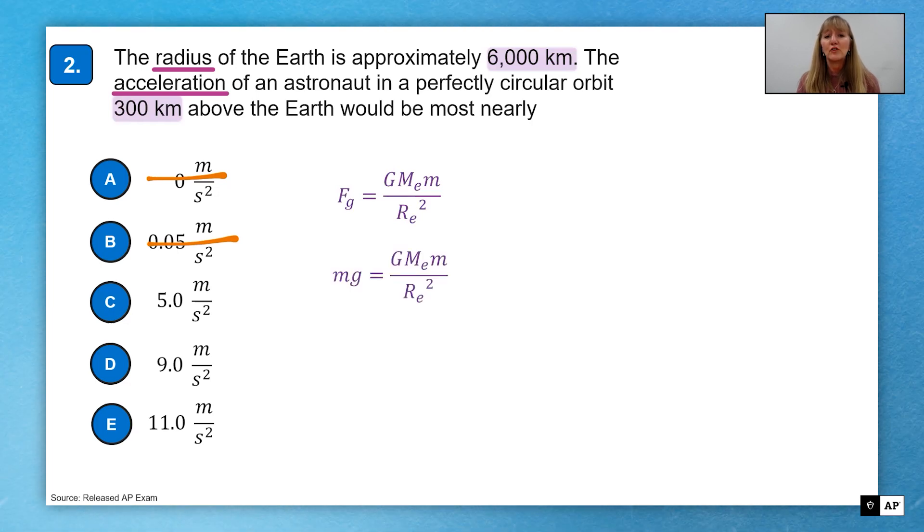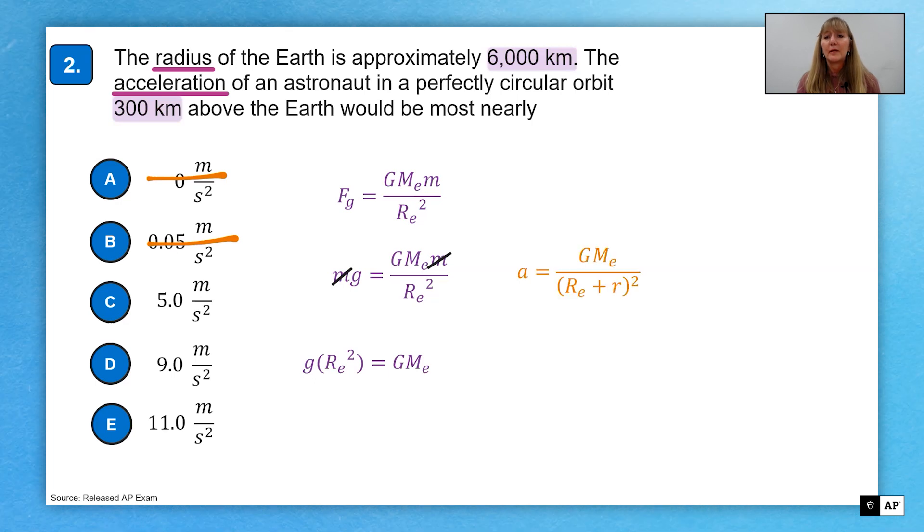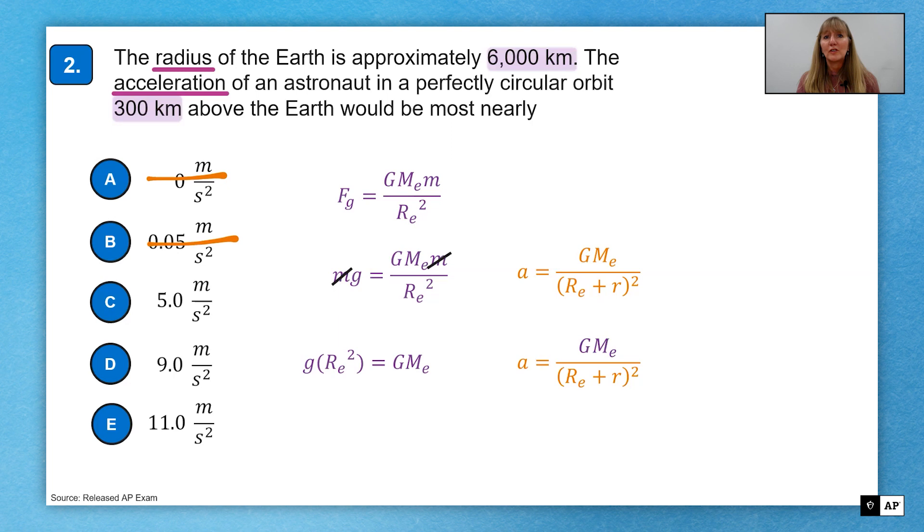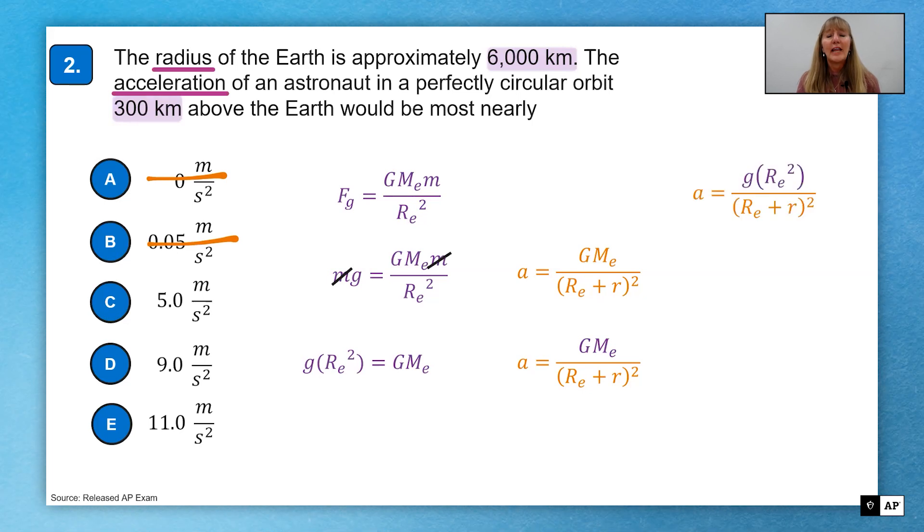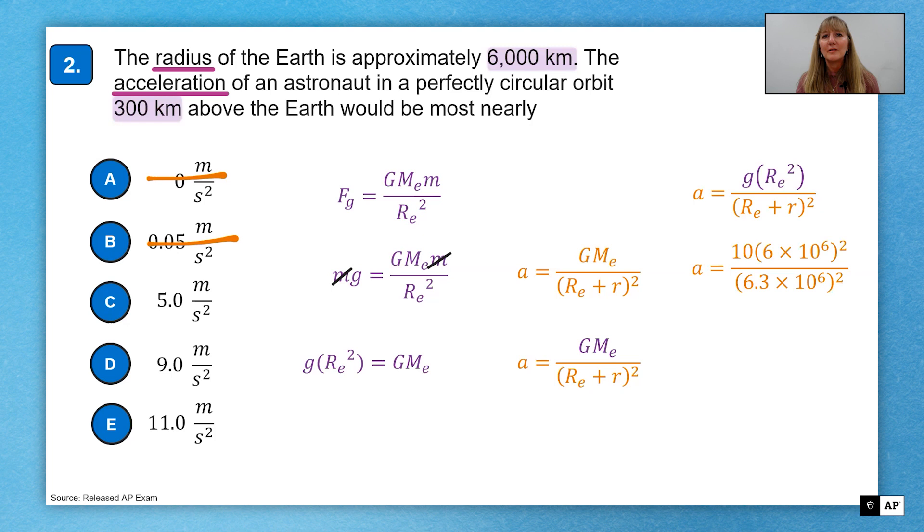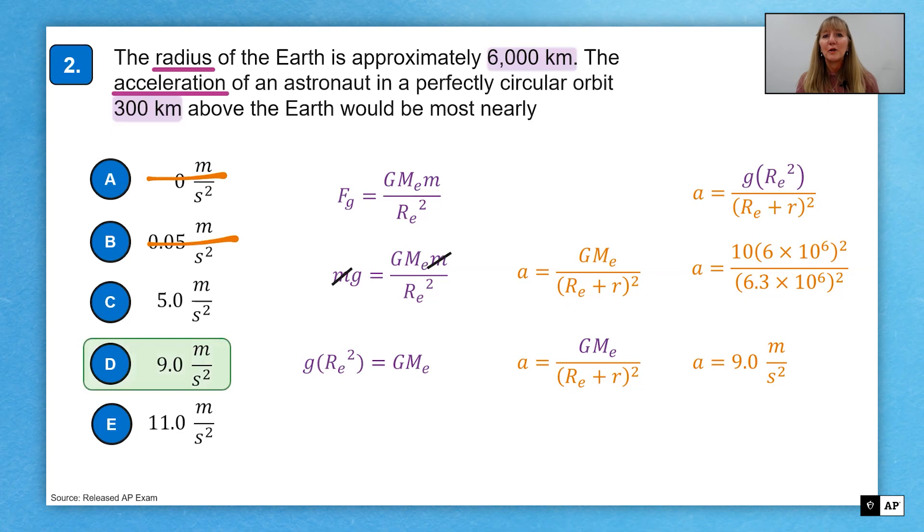Starting with that gravitational force equation, making the substitution for the surface of the Earth equation, I get g equals big G, big M over R squared. This time, however, the radius of the Earth is changing, so I'm going to move that over to the other side and I'm going to leave my constants big G and big M. Starting with the equation now for the radius that's 300 kilometers above the surface of the Earth, then I get this equation, and I can see that again big G, big M in the equation, make that substitution for little g R squared. Now I have all of my variables where I know their numerical values, make those substitutions, and I get that we are approximately nine meters per second squared, which is choice D.